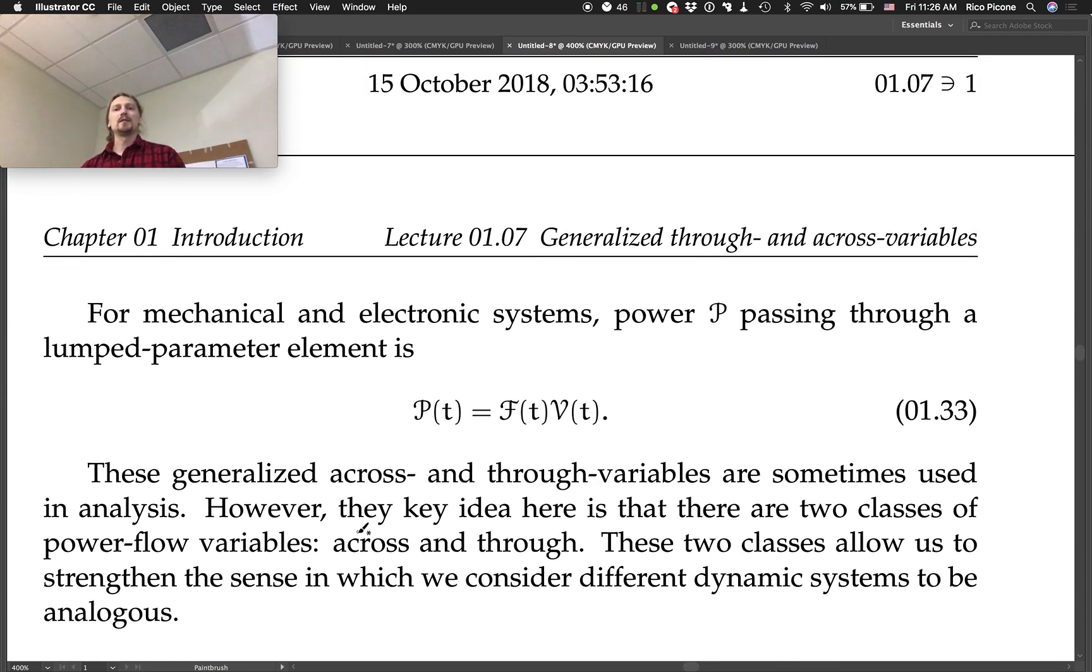So, for mechanical and electronic systems, power passing through a lumped parameter element is the product of the generalized through variable and generalized across variable. So, if this is an electronic system, this is the current and this is the voltage. If it's a translational system, this is the force and this is the velocity. If it's a rotational mechanical system, this is the torque and this is the angular velocity. But we're able now to write a single equation that describes all of them nicely.